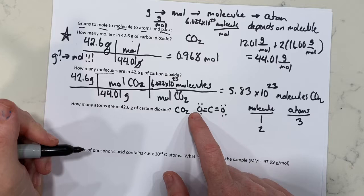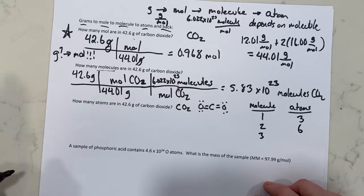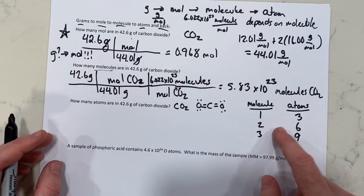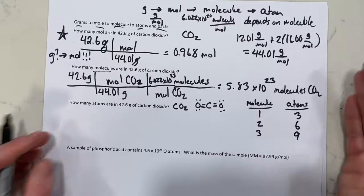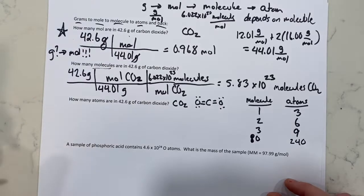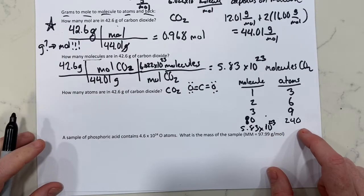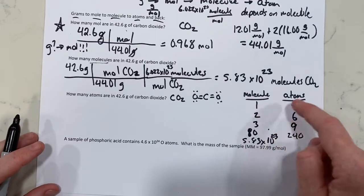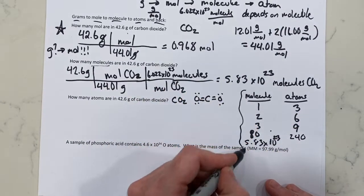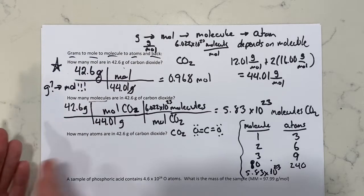If you have one molecule you have three atoms; two molecules gives six atoms; three molecules gives nine atoms — you're always multiplying by three. What if you had 80 molecules? 80 times 3 is 240 atoms. What if you had 5.83 times 10 to the 23rd molecules? Just because you have a big number doesn't mean the pattern stops — you still multiply by three.